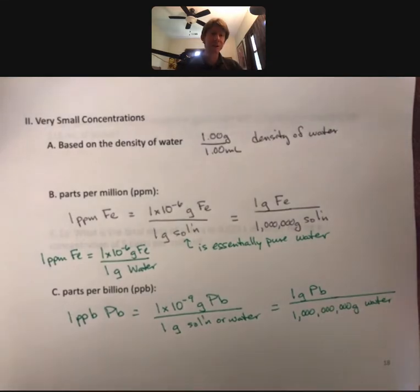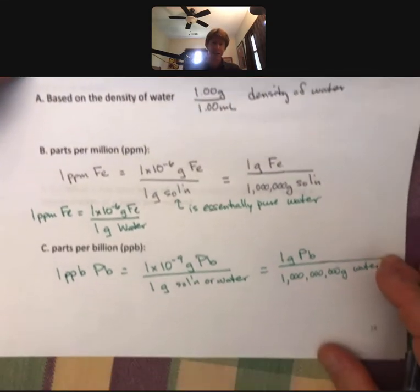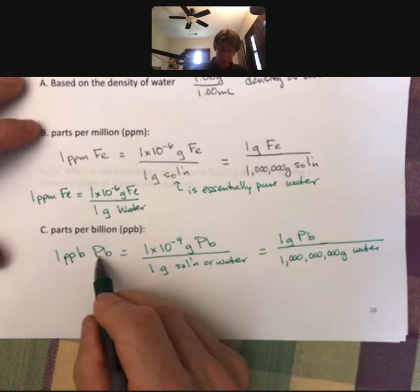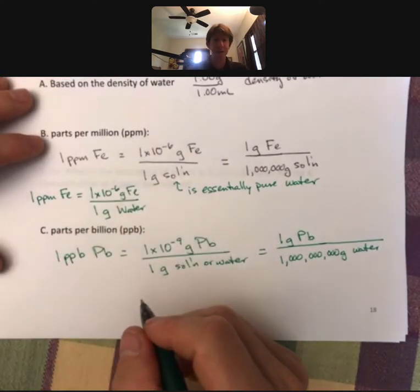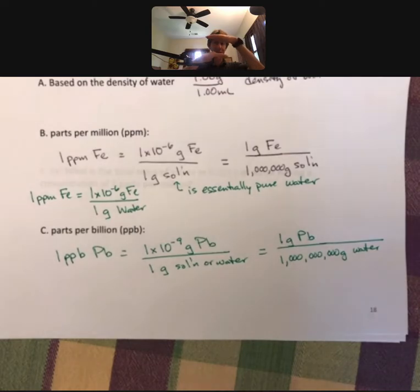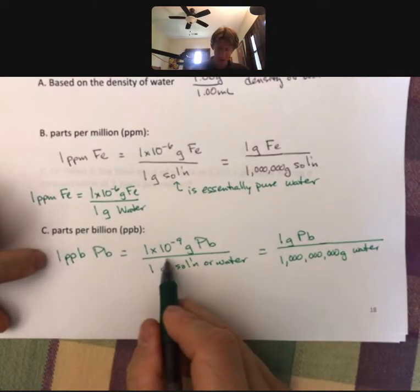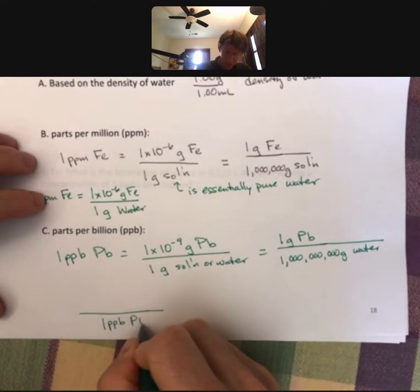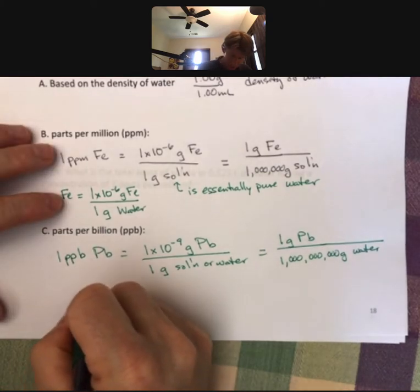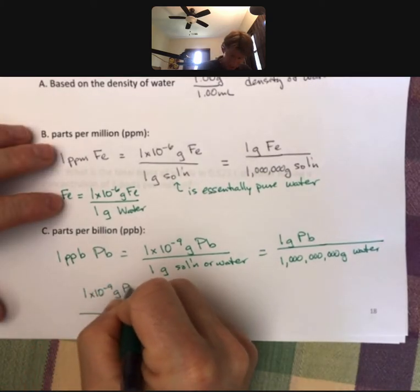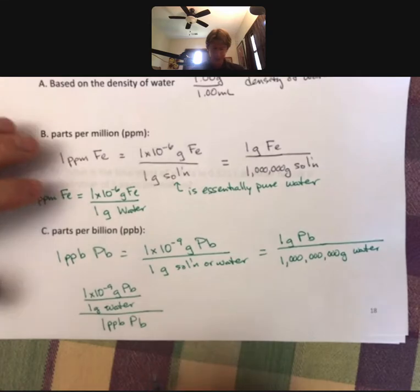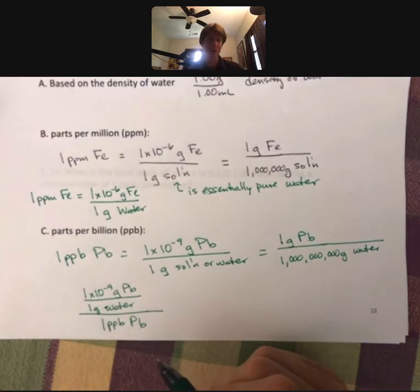We're going to use these as unit conversion factors. These are slightly more complicated than before, but any two things that are equal to each other can be placed above and below each other as a unit conversion factor. So one part per billion of lead equals 1 × 10⁻⁹ grams of Pb over 1 gram of water — this has a complex set of units and we'll talk about how to handle the math in the examples.